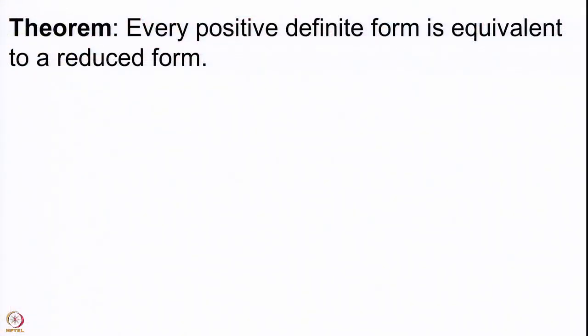We now come to the theorem proved in the last lecture: every positive definite form is equivalent to a reduced form. Starting with any positive definite form, whatever coefficients it may have, we can always change it using the allowed transformations to obtain a reduced form. The proof idea is simple — we will only apply the transfection and the Weyl element, modifying the form until after finitely many steps we get a reduced form.